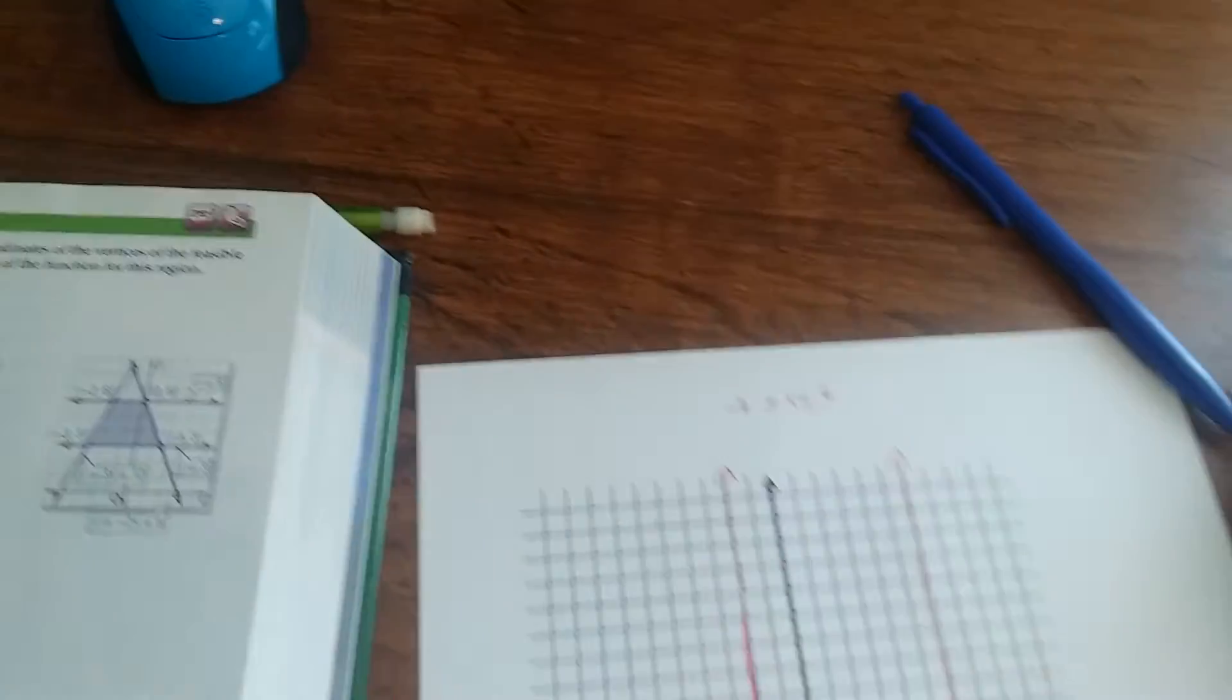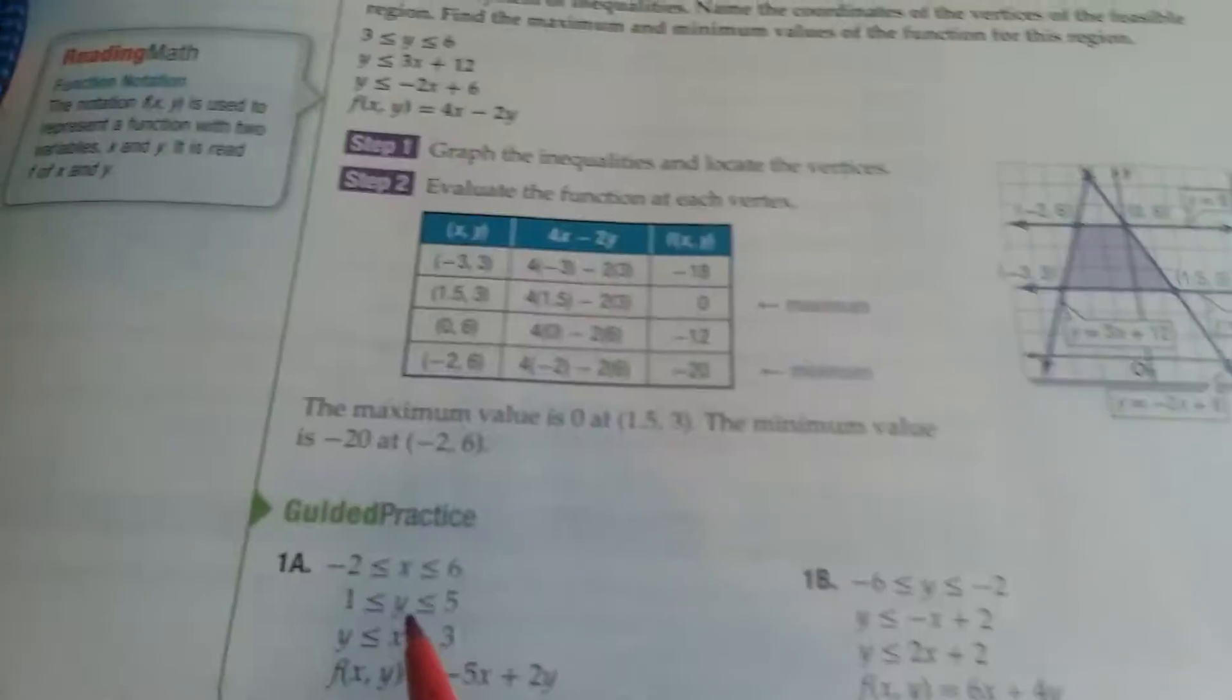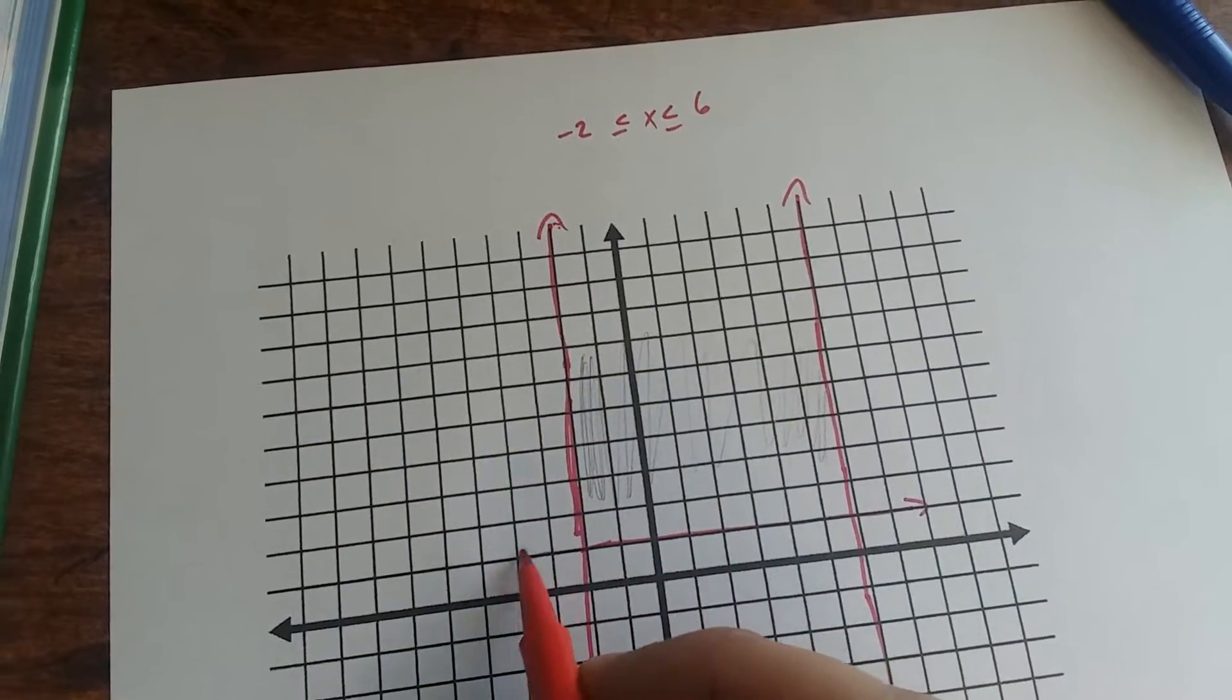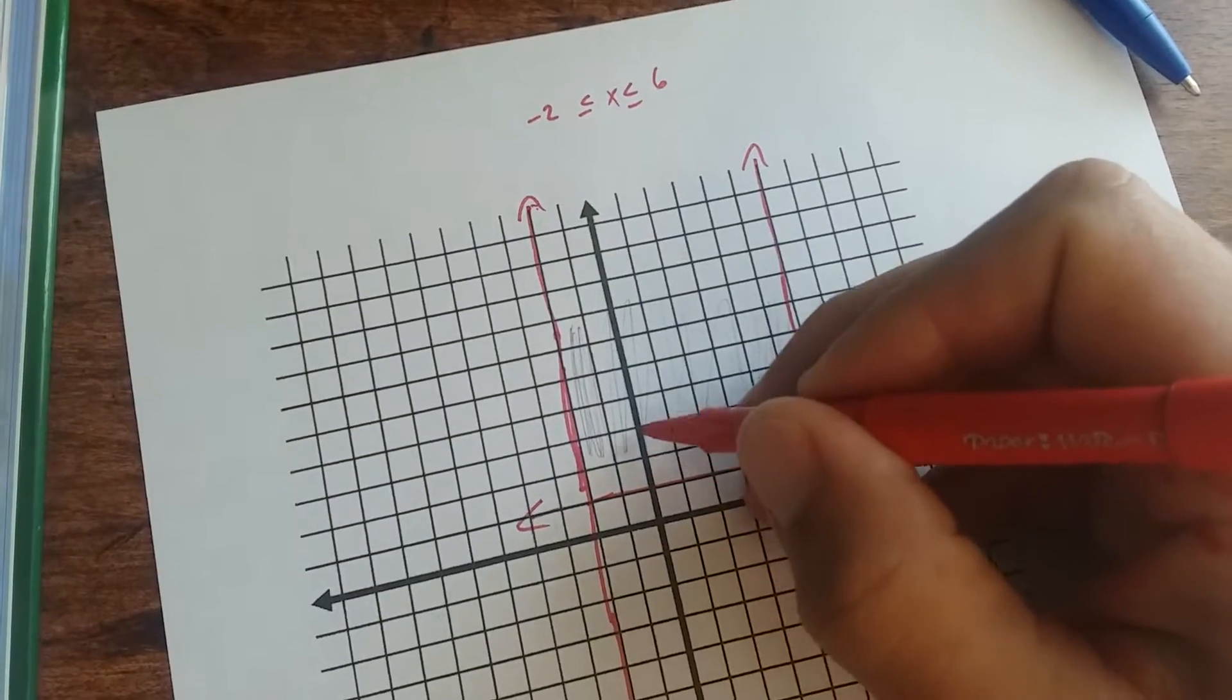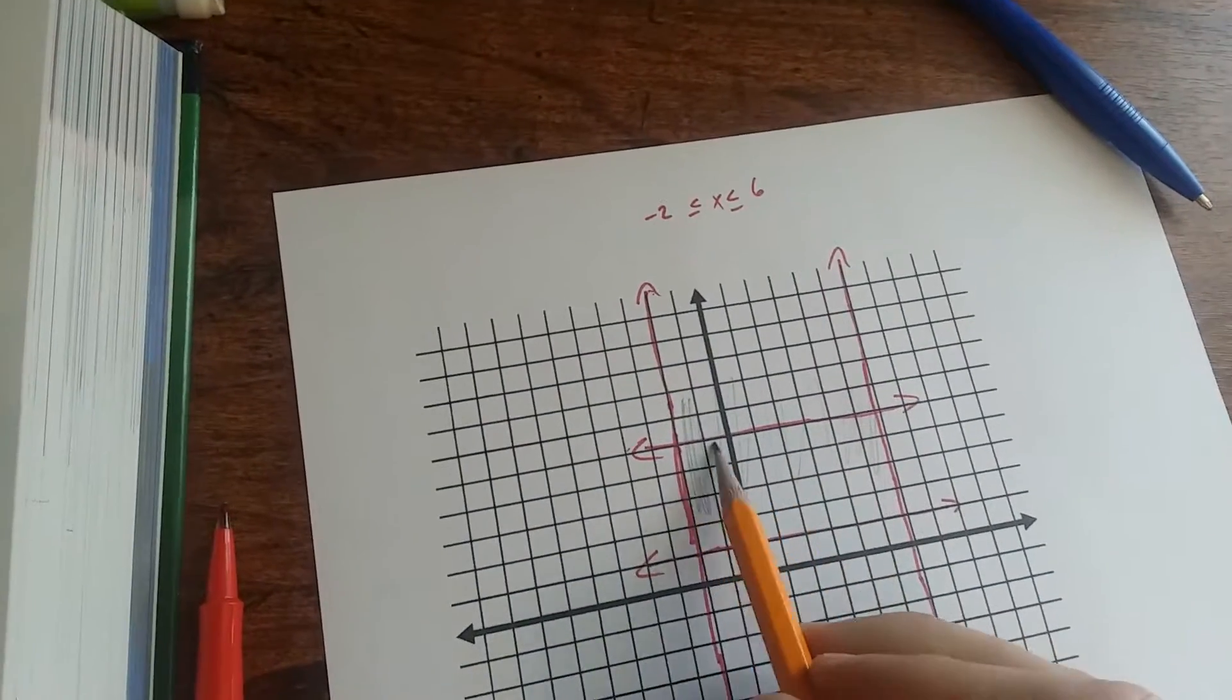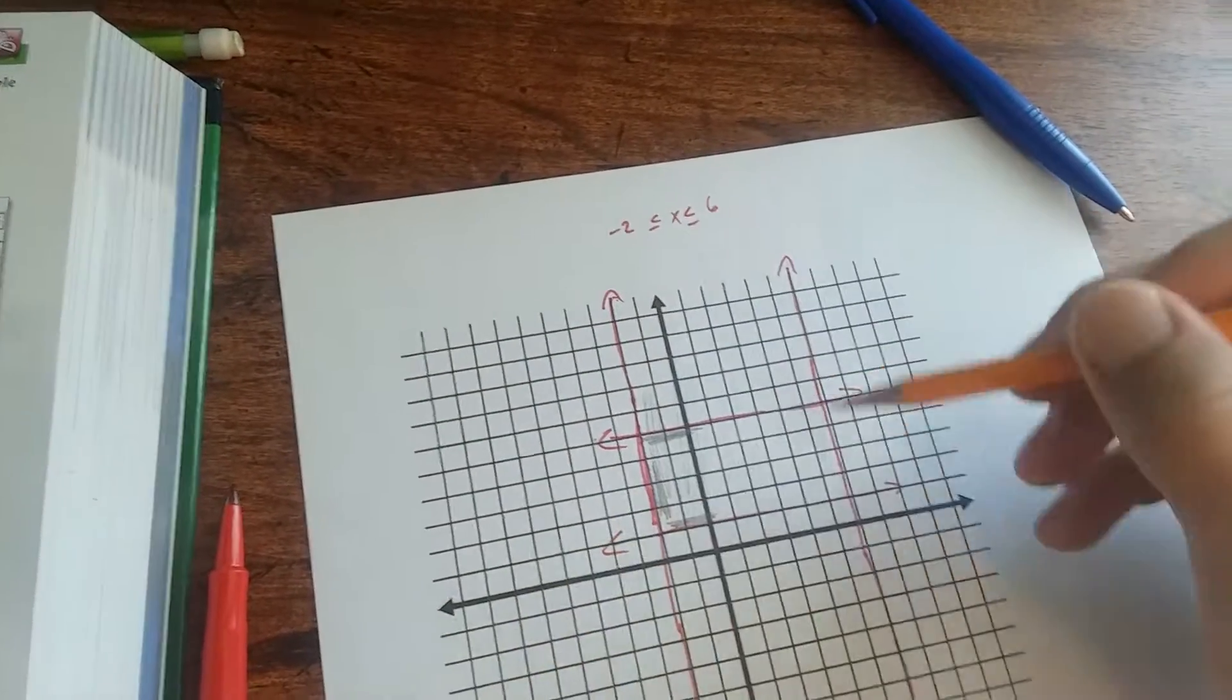And we would be shading on the inside here. Y is between 1 and 5, so we're above 1 here. Y equals 1 is this line, and then y equals 5 is up 1, 2, 3, 4, 5 right here. So that means our feasible region is going to be under this line and over this line. It's going to be somewhere in this box.